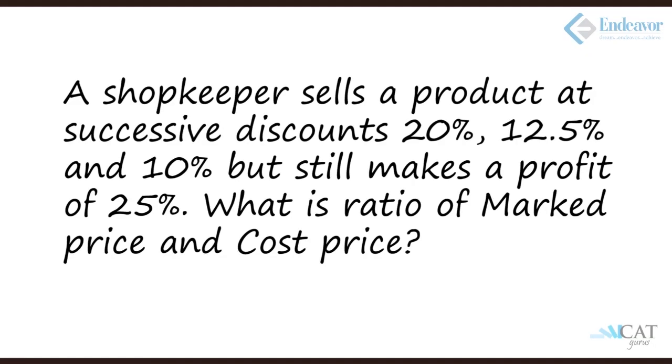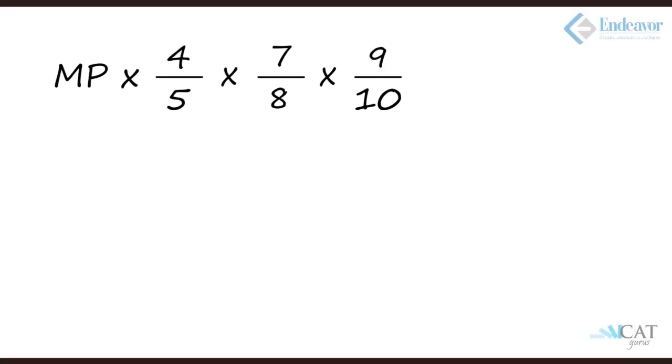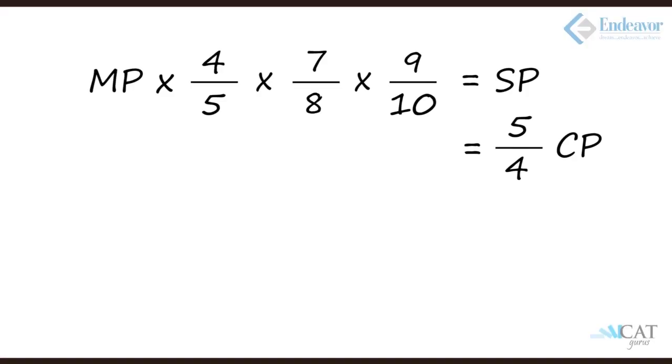Let's take another example. A shopkeeper sells a product at successive discounts of 20%, 12.5%, and 10%, but at the end he still makes a profit of 25%. What is the ratio of the marked price to the cost price? Let's start. 20% discount is 1 - 1/5 = 4/5. 12.5% discount is 1 - 1/8 = 7/8. 10% discount is 1 - 1/10 = 9/10. So marked price multiplied by 4/5 × 7/8 × 9/10 gives us the selling price, which is 25% more than the cost price, equal to 5/4 × CP.